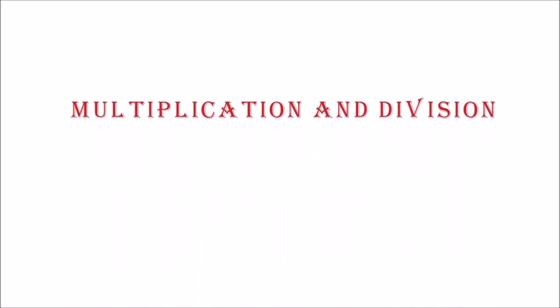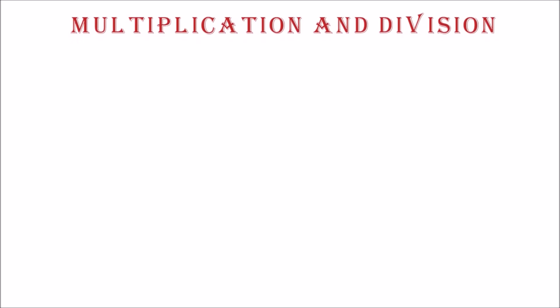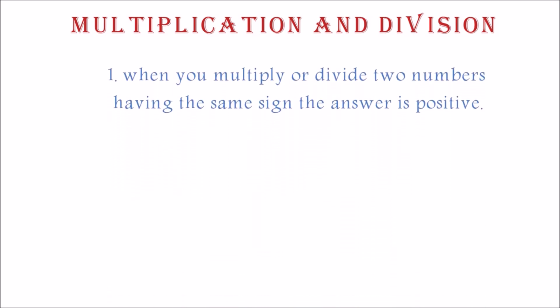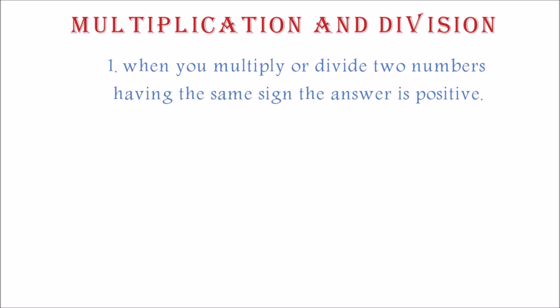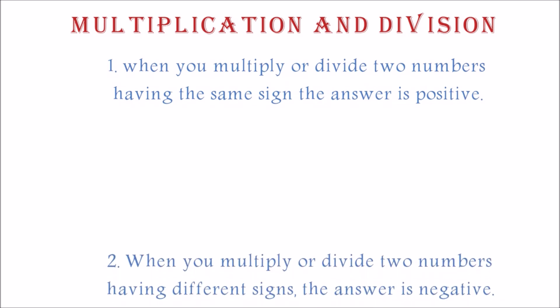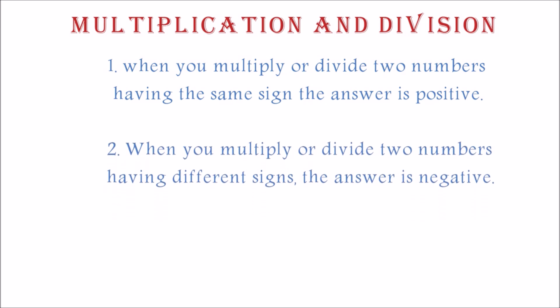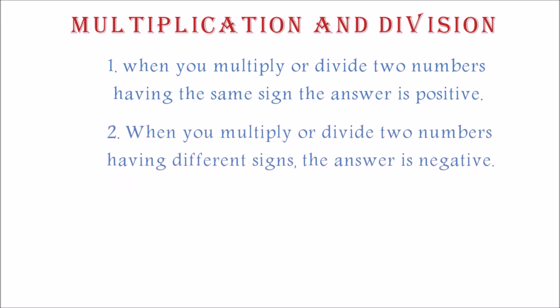Multiplication and division. Multiplication and division is actually easier if you remember your multiplication table. The rules are: one, when you multiply or divide two numbers having the same sign, the answer is positive. Two, when you multiply or divide two numbers having different signs, the answer is negative.